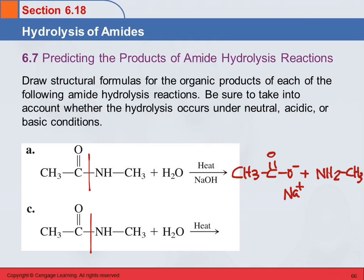For the next problem, we're going to cut it right here: CH3, C double bond O, get an OH there, and then this group will be NH2CH3 — methylamine. It says heat, but it doesn't say acid or base, so nothing further is going to happen to these products. You'll get the carboxylic acid and the amine, because the amine is a weak base and the carboxylic acid is a weak acid, so they're not necessarily going to react with each other.